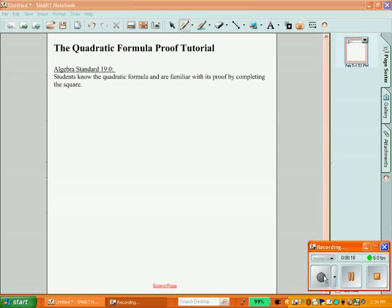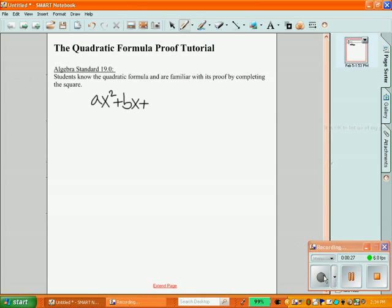First of all, I'm going to start with the standard form of a quadratic equation which is ax squared plus bx plus c equals 0.